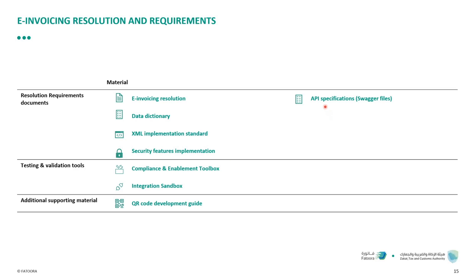Additionally, API specifications are available in Swagger format. For testing and validation we have published two tools: the first is the Compliance and Enable Toolbox, which is the SDK — an offline version to test the compliance of your implementation. We will have a dedicated session for the SDK. We have also developed an Integration Sandbox to test the integration part of your solution. Finally, we have a dedicated QR code development guide providing a step-by-step guide on how to develop the QR code to be printed on your invoices.